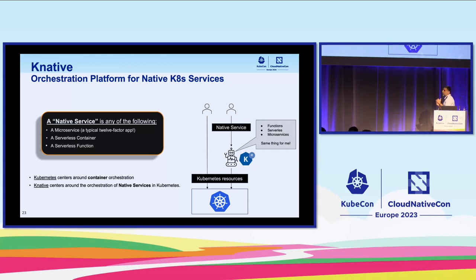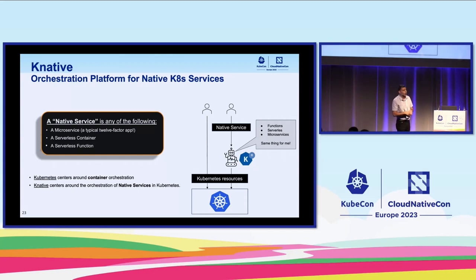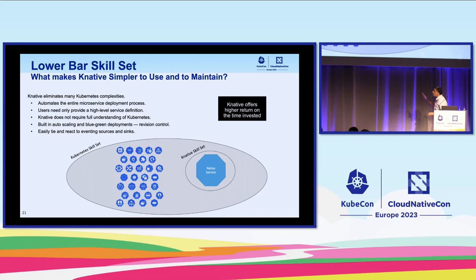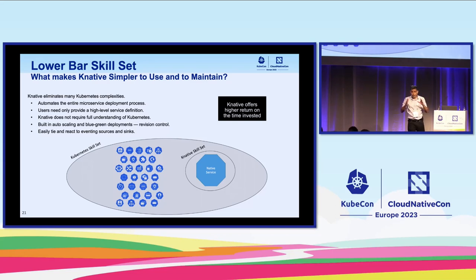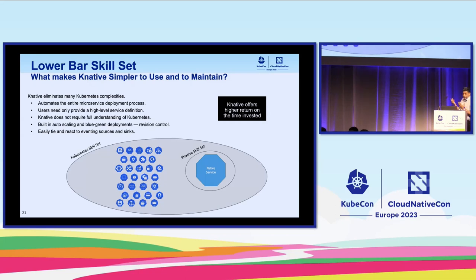We make a distinction between running directly against Kubernetes — talking to the Kube API as usual — or talking to the Knative automation layer, which does that for us. It's a layer that simplifies things, implements best practices, and reduces complexity. Instead of managing all the Kubernetes resources yourself, you essentially have one important resource to manage: the service resource. This reduces how much you and your team need to learn in order to deploy, run, and operate services.